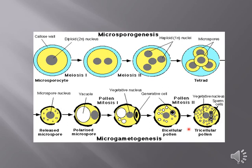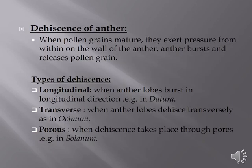After the pollen has formed, it is time for the shedding of the pollen, which will take place after the dehiscence of the anther wall. After maturation, pollen grains exert pressure from within on the wall of the anther, resulting in the bursting of the anther and release of pollen grains.